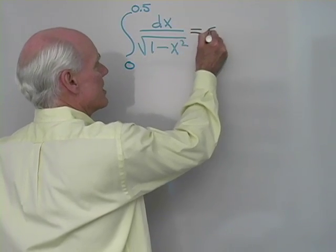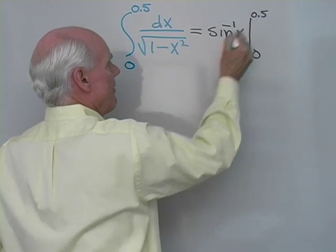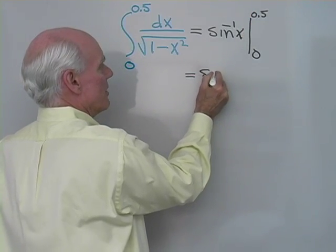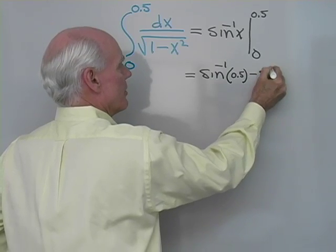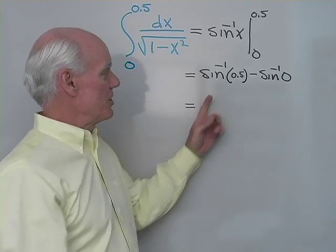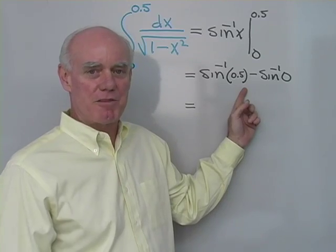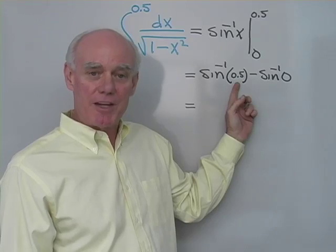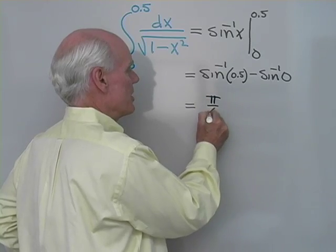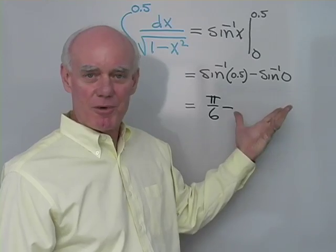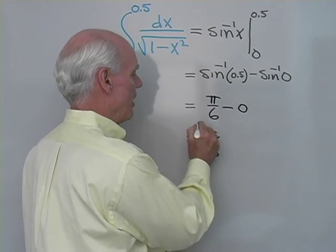Using the inverse sine antiderivative formula, this evaluates to inverse sine of x from 0 to 0.5, which is inverse sine of 0.5 minus inverse sine of 0. The angle whose sine is 0.5 is 30 degrees, written in radians as pi over 6. The angle whose sine is 0 is just 0. So the definite integral equals pi over 6.